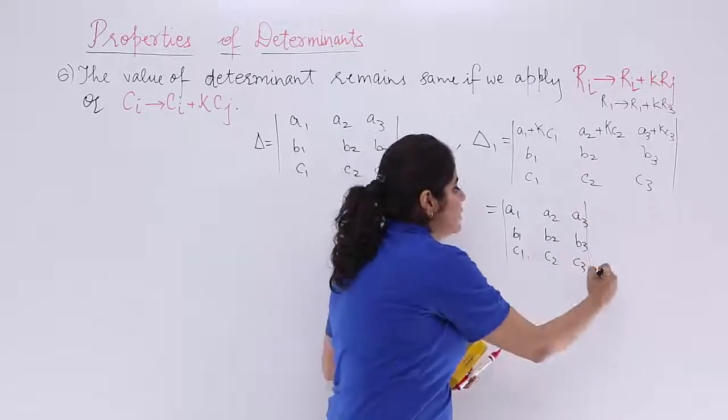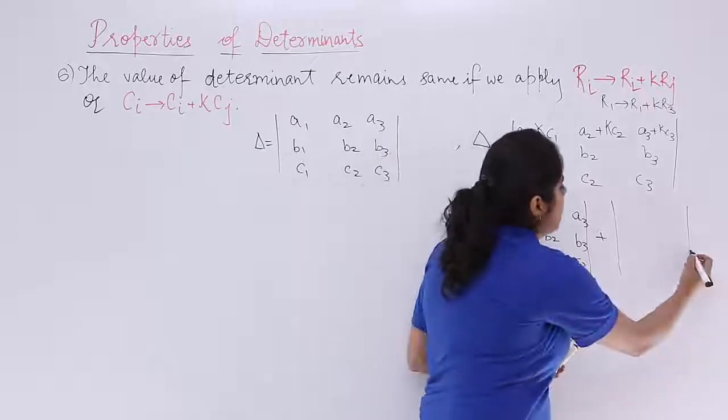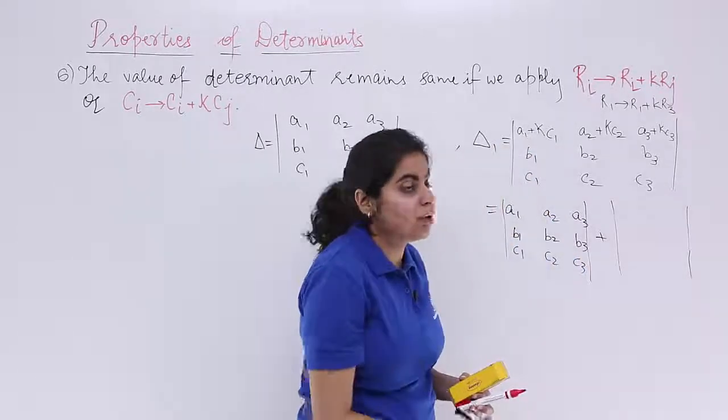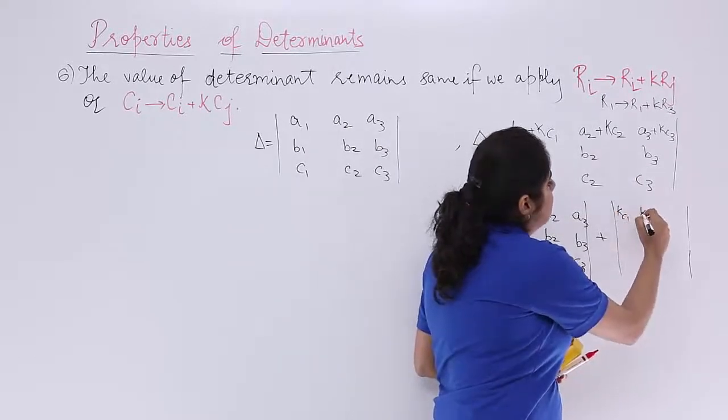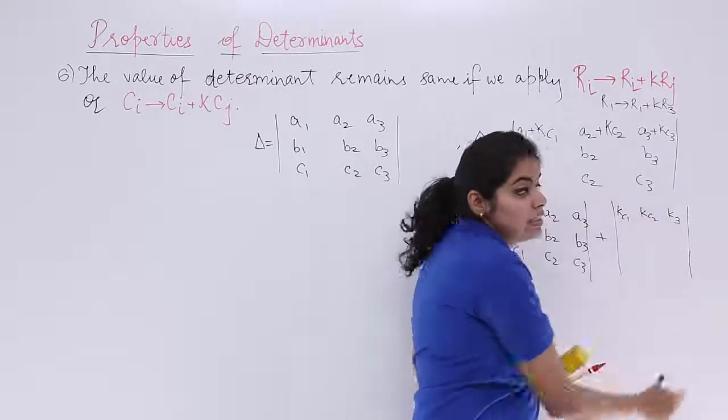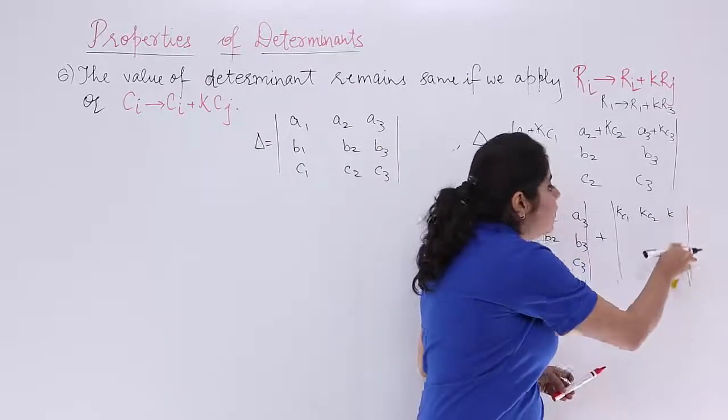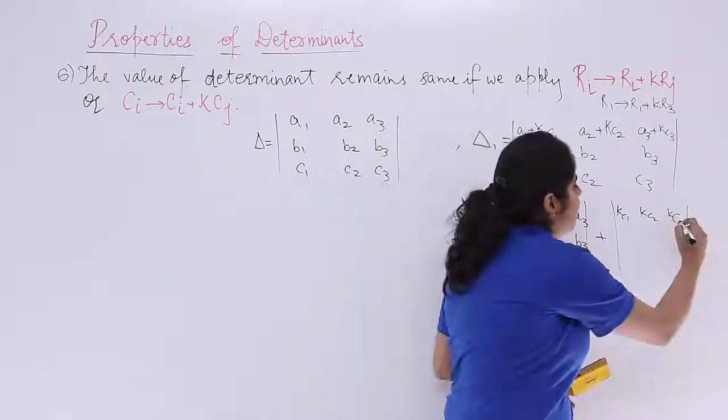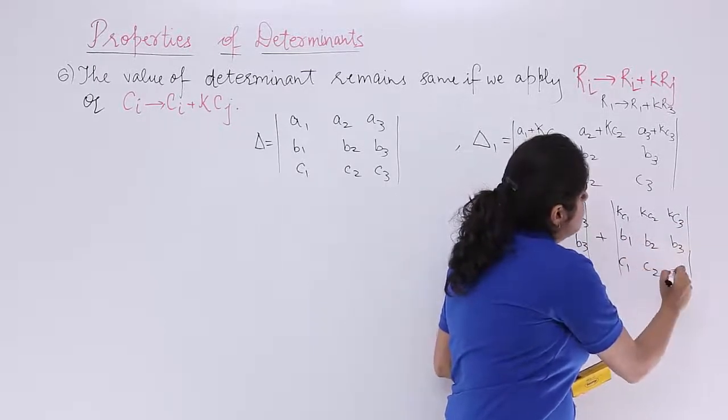And what about the second determinant that we need to see? My second determinant will be having k c1, k c2, k c3. Changes not in any other thing. So don't change b1, b2, b3 and c1, c2, c3. Right? So it is b1, b2, b3, c1, c2, c3.